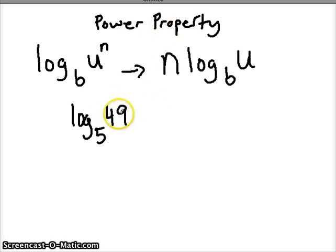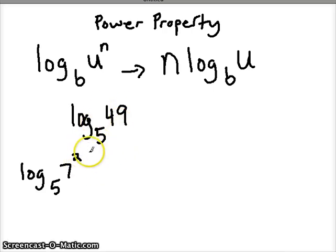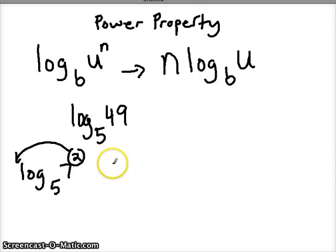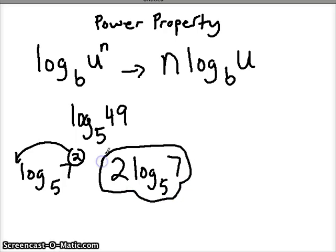So let's write this using our exponents. If I have log base 5 of 7 squared — that's the same thing — I can apply my power property. I'm going to take the exponent and tag it on to the front. So 2 is in front of log base 5 of 7. And I've just used my power property to simplify that expression.